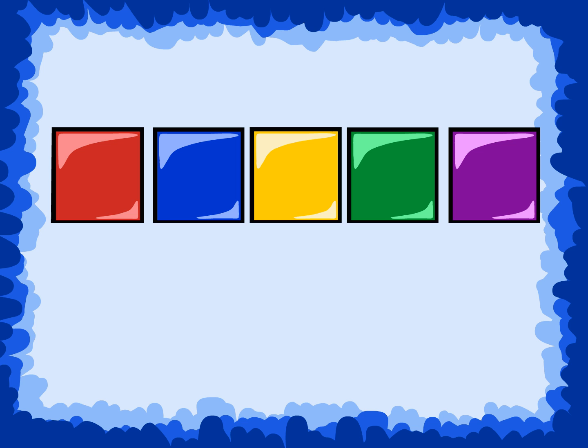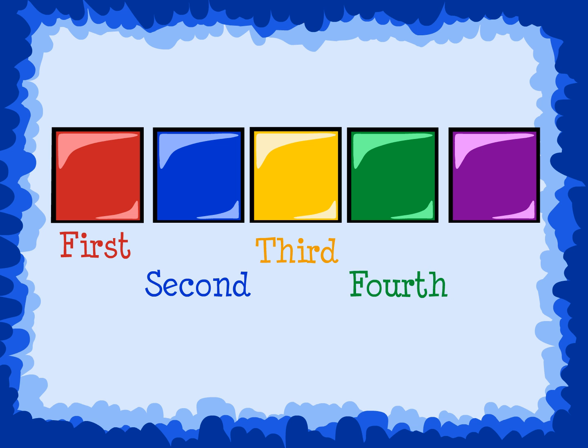Look at this set of colors. Red is at the beginning of the set, so we call red the first color. Blue would be the second color, because it comes after red. Yellow is third, since it is next in line, and green is fourth. Purple is the last color we see in the set of five colors, so it is called the fifth color.